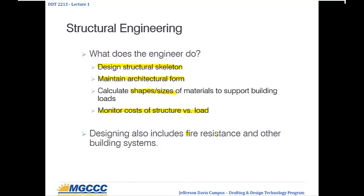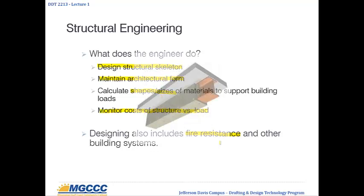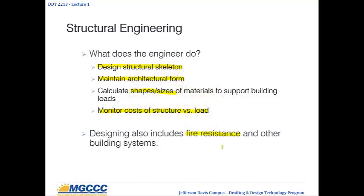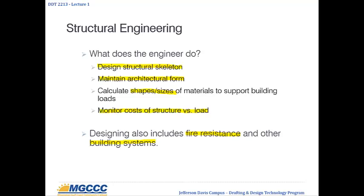Also in that process we should look at fire resistance. How are we going to maintain a fire resistance rating for the building? That could be spray-on fire coatings, multiple layers of sheetrock — different ways to do it. How are we going to cover our structure to maintain the fire resistance we need, which is all dictated by codes? The structural engineer also has to take into account other building systems — mechanical systems, electrical systems, sprinkler systems — and whether they're going to affect the structure or if the structure can interfere with those systems.